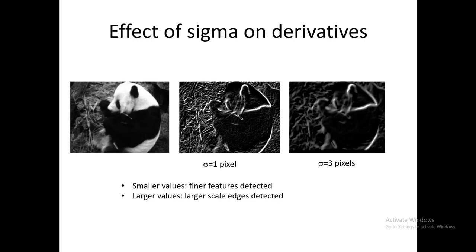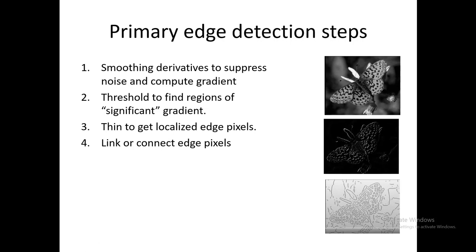Changing the size of the Gaussian also affects the scale of features or edges that are detected. When we change sigma we get enhanced magnitudes of the derivatives as a function of how quickly the image varies over space. Smaller sigma means fine features are detected, and larger sigma means large-scale edges are detected. Now we know how to compute smooth derivatives and gradients.